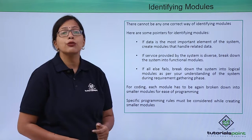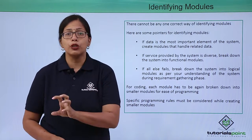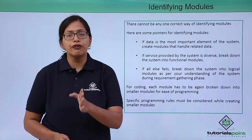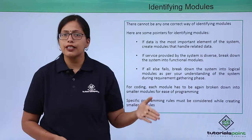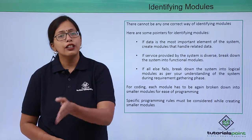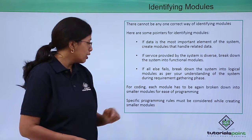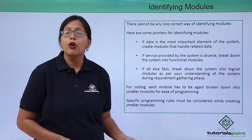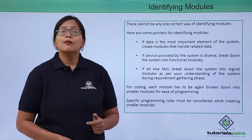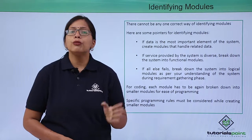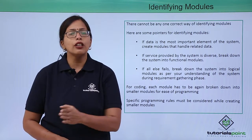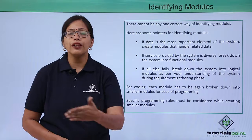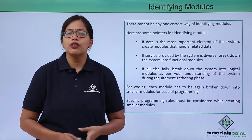For coding, each module has to be broken down further into smaller modules, and this must be done in consultation with the programming rules of the language being used. C, Java, and PHP each have different rules that must be considered. Before these modules can be coded, there should be a step-by-step solution so the coder can understand where the data and processes are going and how they are flowing through the business system.